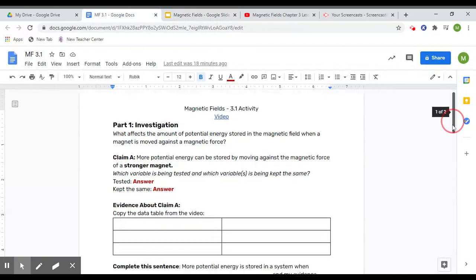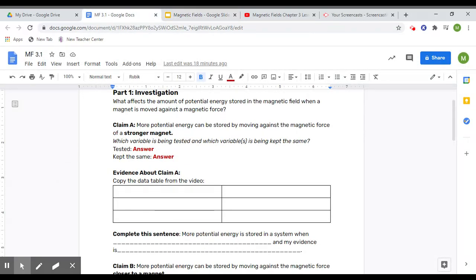You can follow along with me on the worksheet and I will be showing you the video for Claim A. This is about the magnetic force of a stronger magnet. As the video plays, I want you to try to figure out what variable is being tested and what is being kept the same.